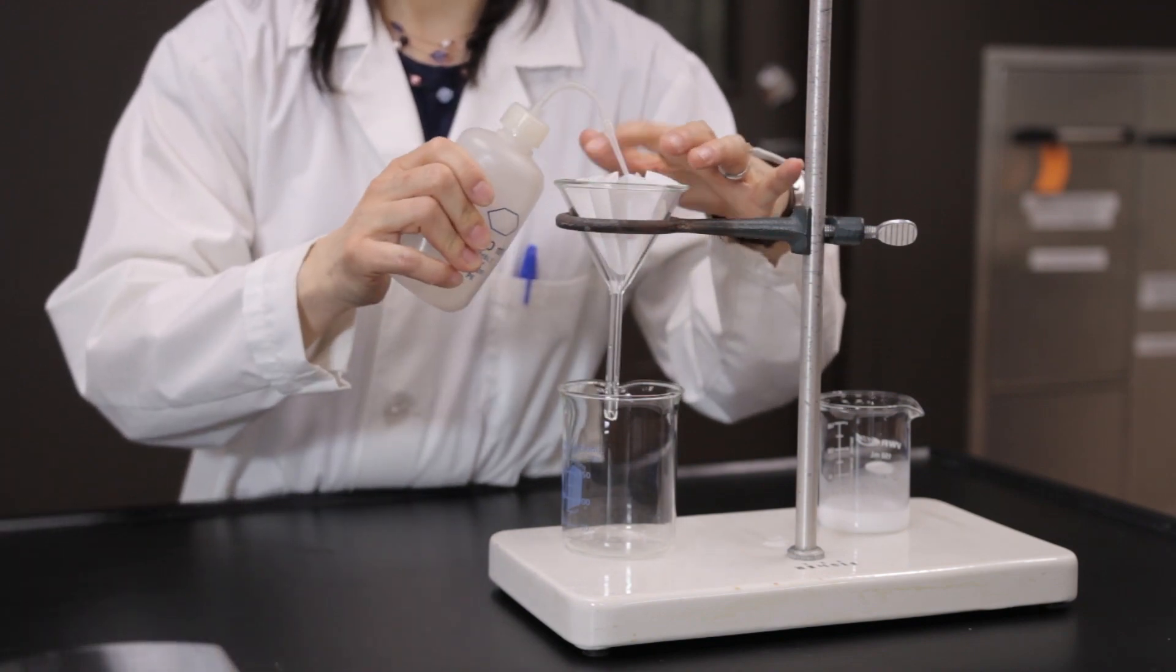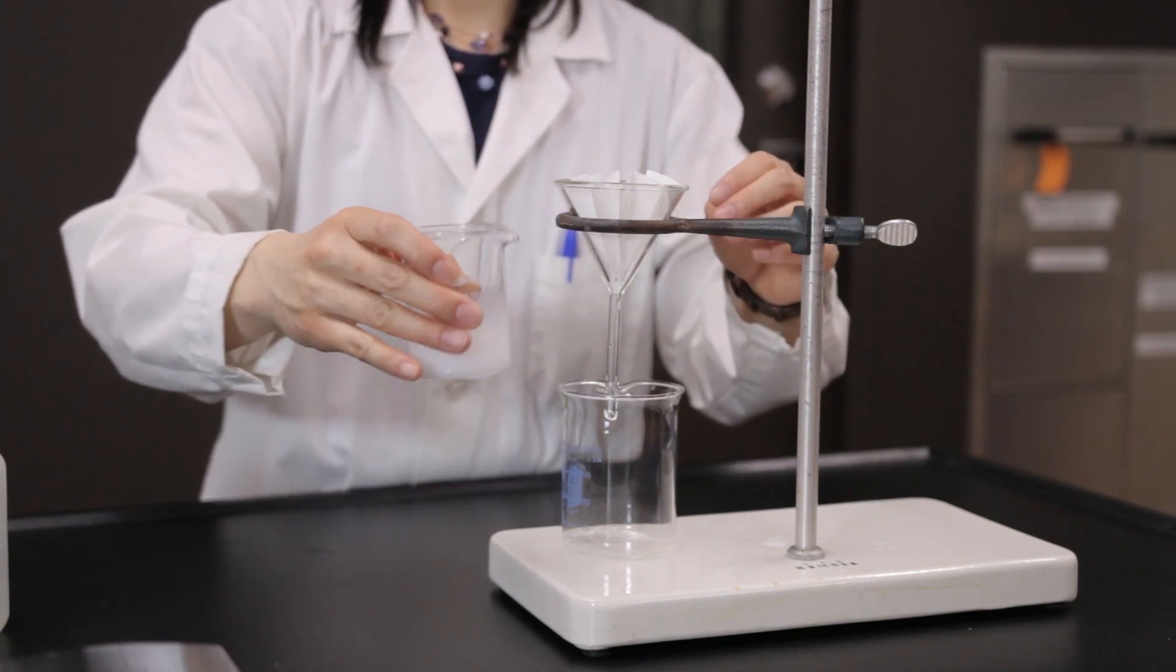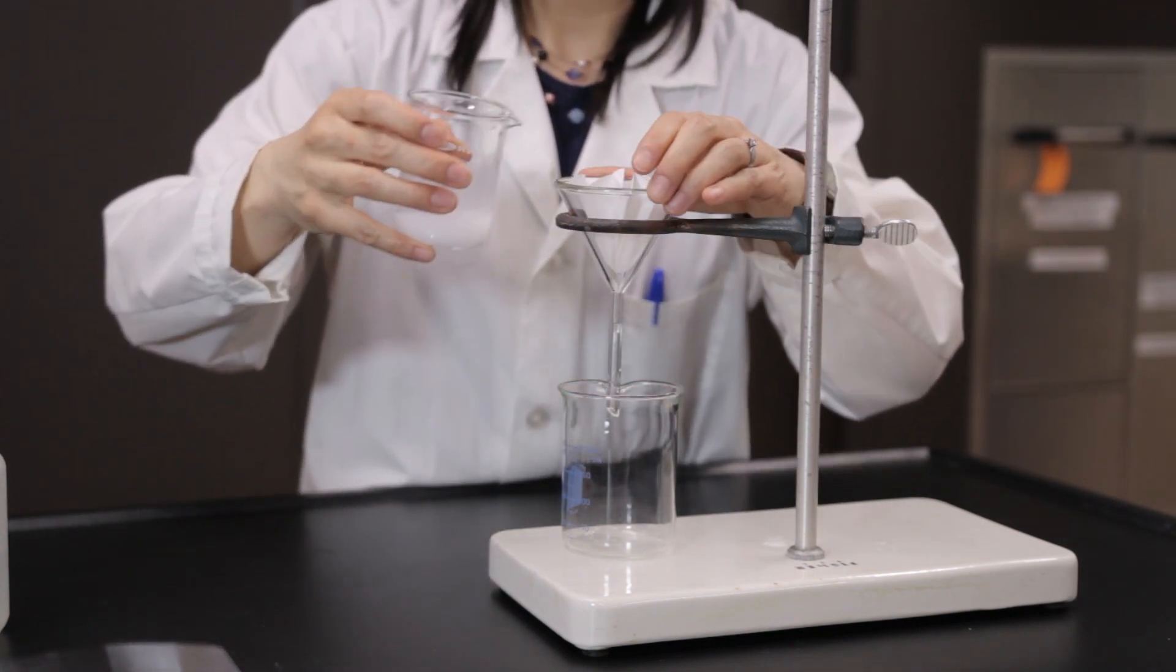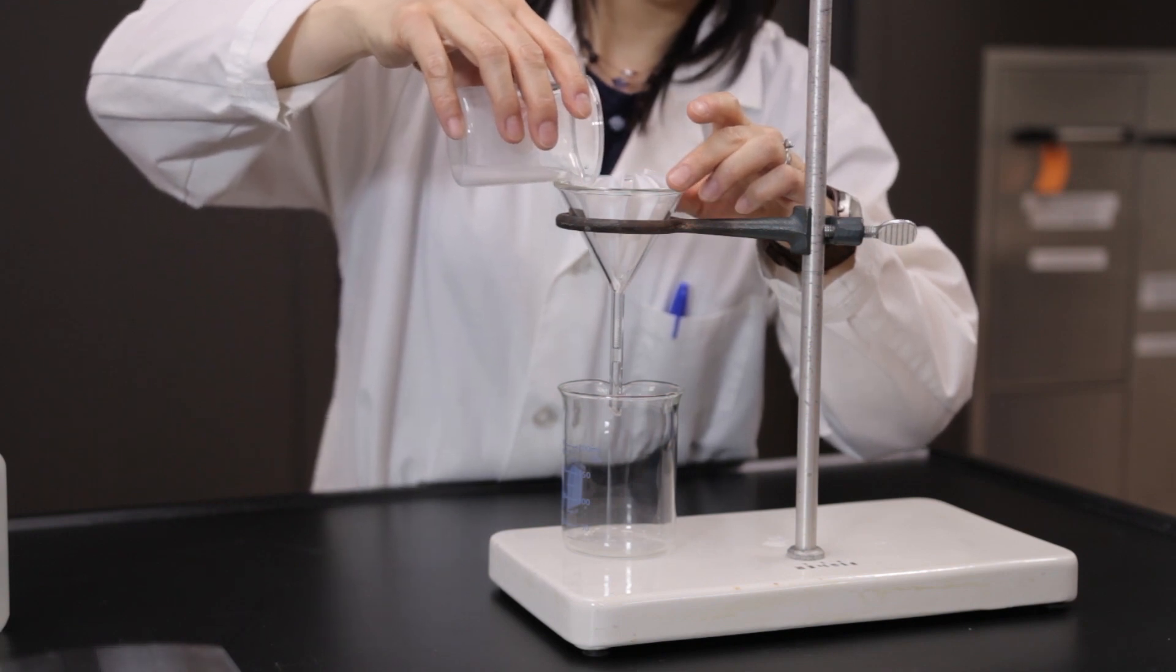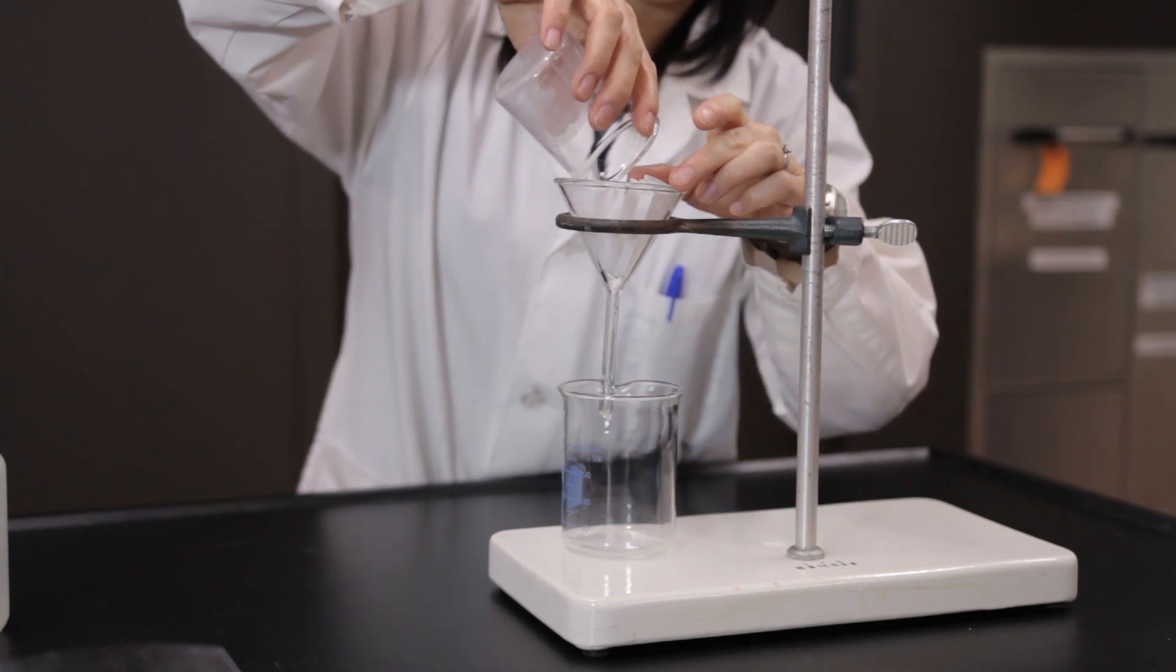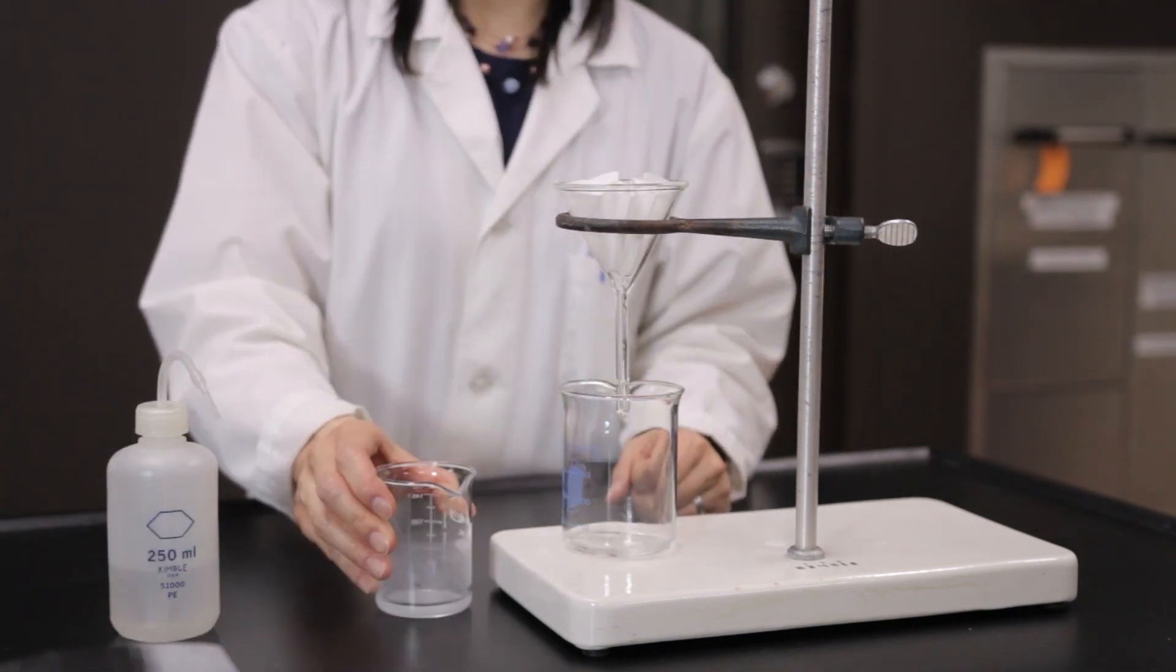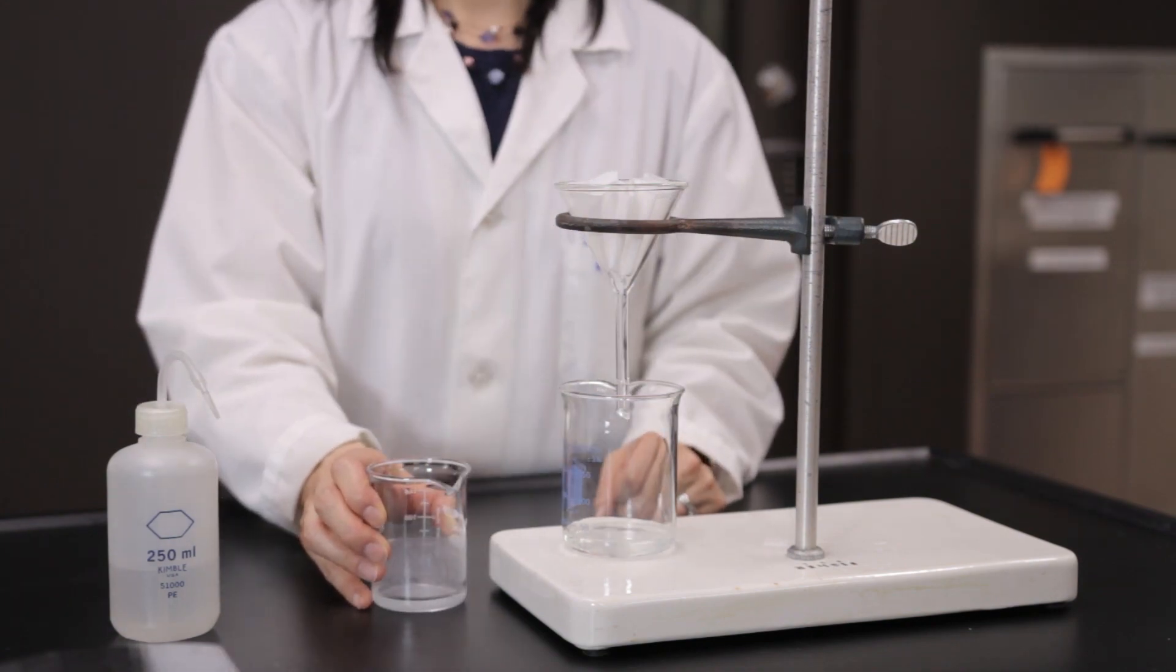Filter the solution to collect the precipitate. Rinse the precipitate a few times with small quantities of distilled water and then with small quantities of ethanol. Rinse the beaker a few times with distilled water to transfer as much of the product as possible into the filter paper.